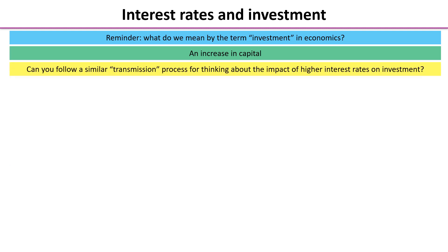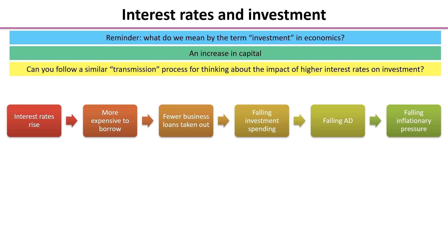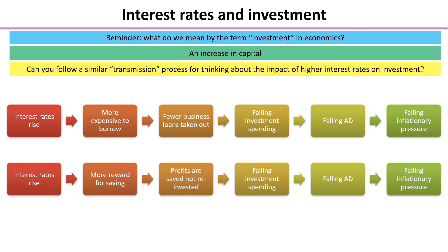We now need to look at the transmission process for firms thinking about higher interest rates. First, exactly the same as for consumers, it's more expensive to borrow from banks, so fewer business loans are taken out, meaning falling investment spending — and investment as part of aggregate demand falls, reducing inflationary pressure. Firms also save: with their profits, instead of reinvesting or paying dividends, they may save them. There is more reward for saving, so profits are saved and not reinvested, causing falling investment spending and reducing inflationary pressure.